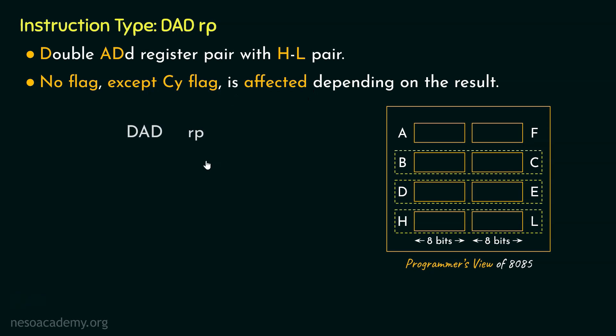Now coming to the instruction type DADrp, this instruction falls under the category of one-byte long instructions. Let me show you the different instructions of this particular type. The instructions are DADB, DADD, and DADH. Interestingly, within the mnemonic itself, although the letter X isn't mentioned, we are talking about the register pairs, and as you can notice, only the names of the first registers are mentioned.